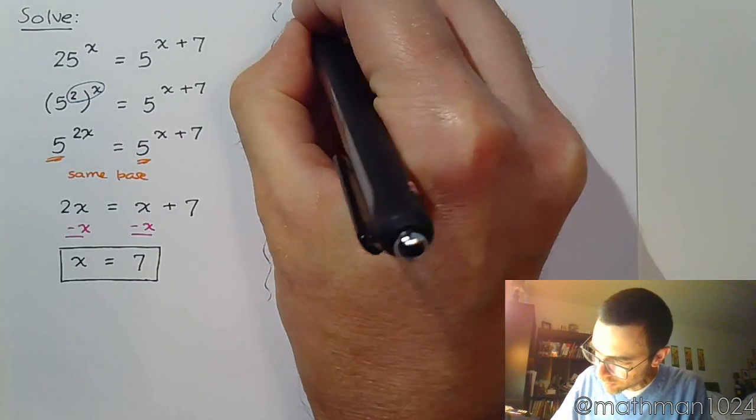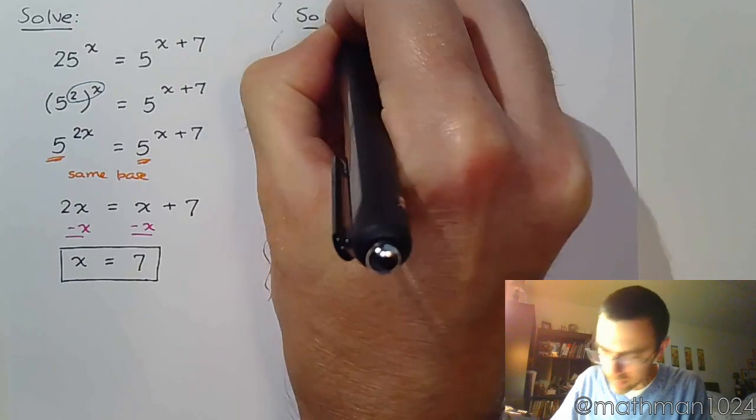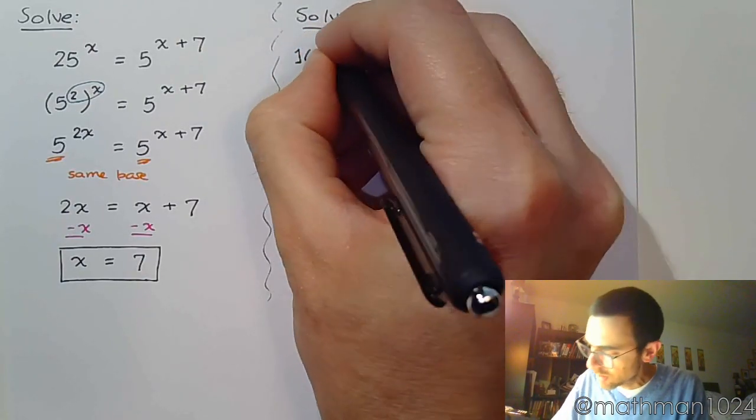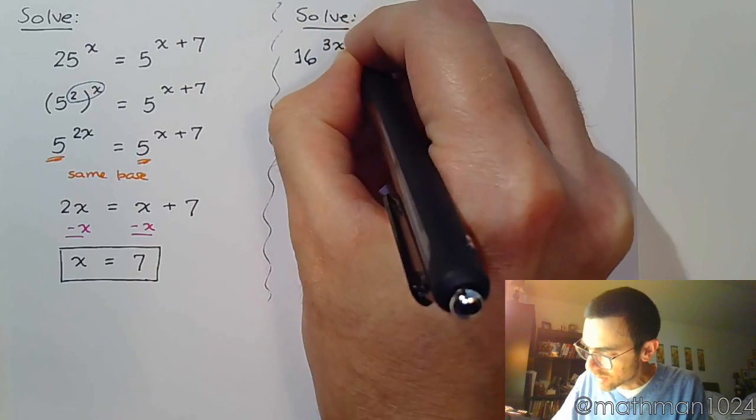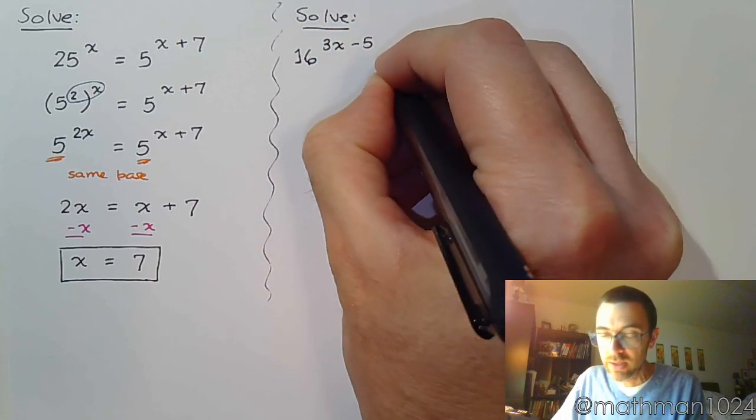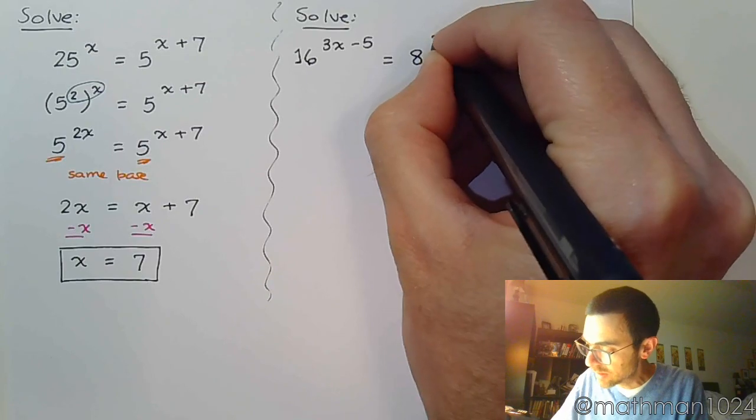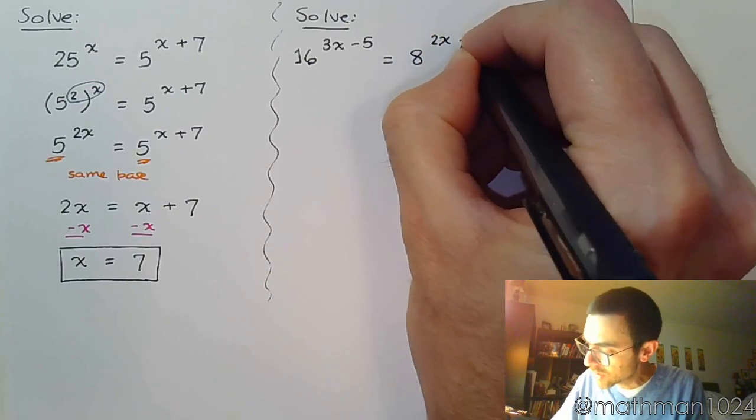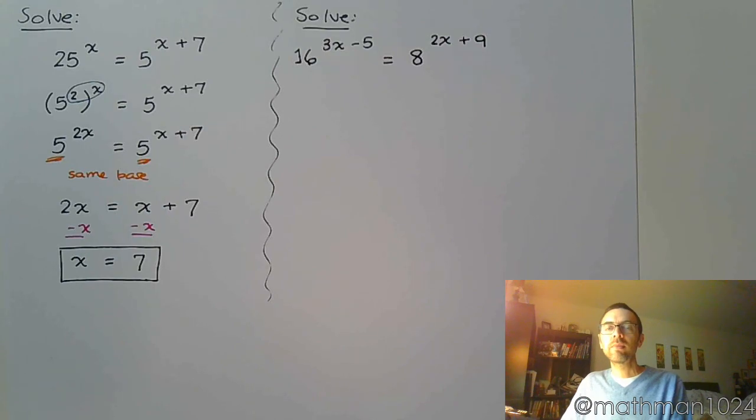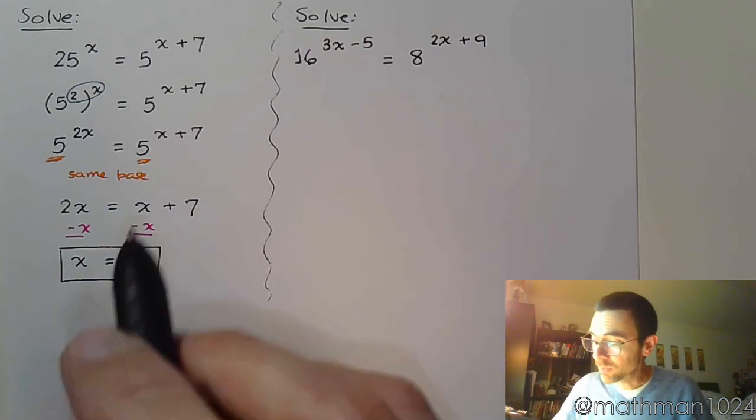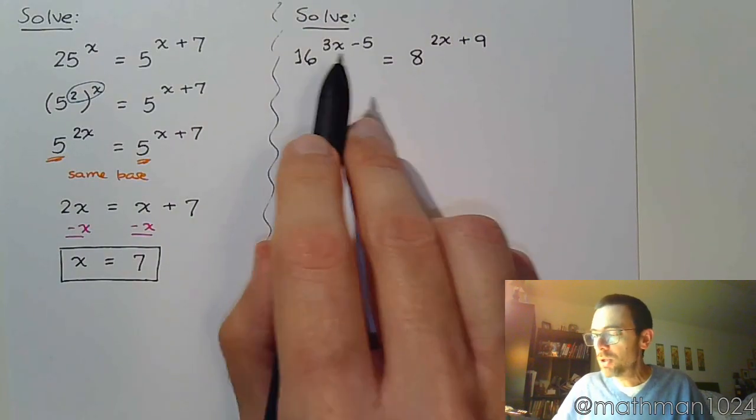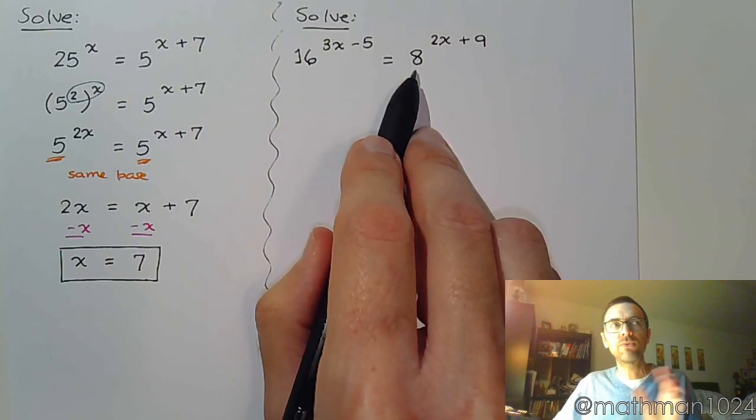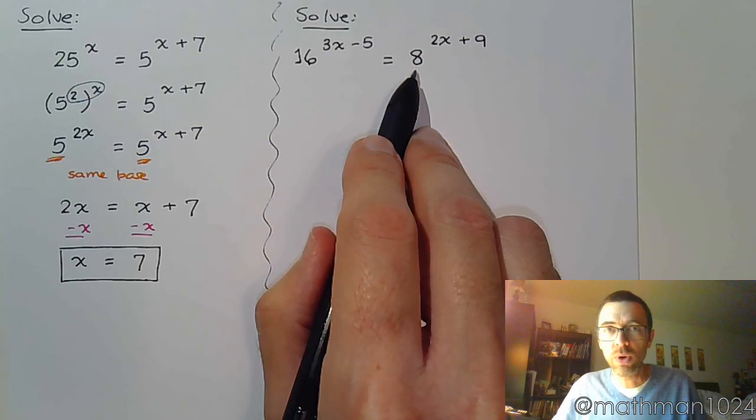The next example is 16^(3x-5) = 8^(2x+9). If we look at these, you might think they have a common base of 4. Well, not really, at least not in a way that's going to be nice for us. You can rewrite 16 to be 4^2, but you can't rewrite 8 to be 4 to a power that's really nice and easy to work with.